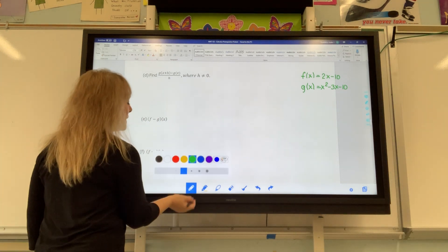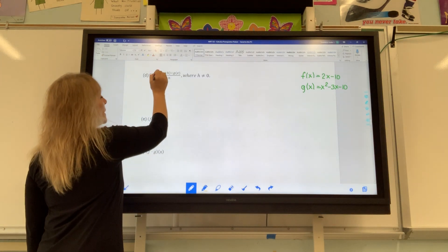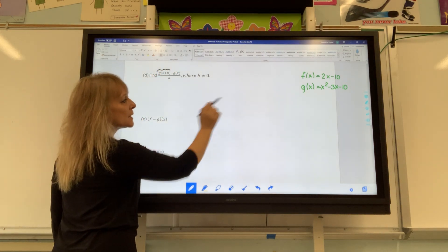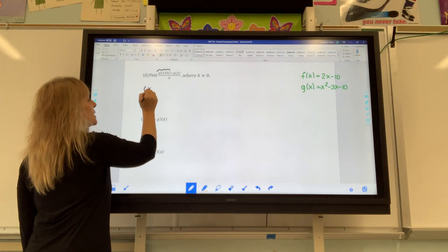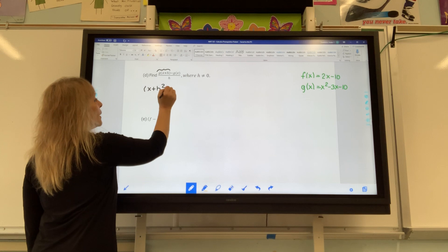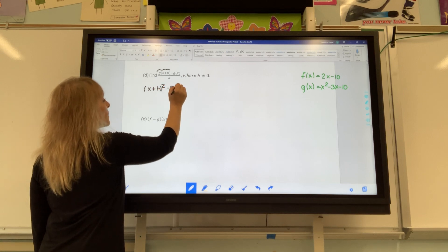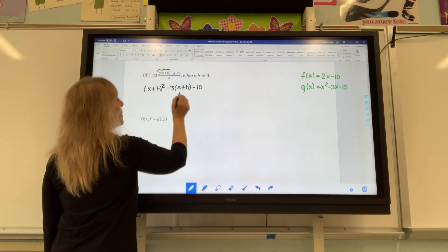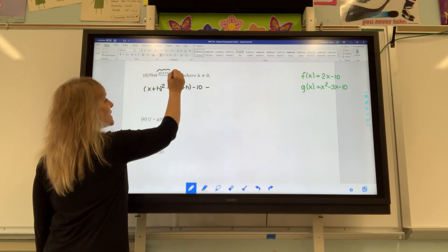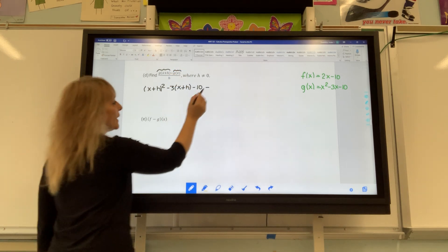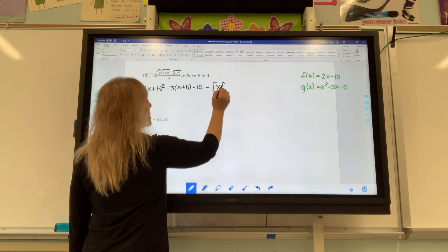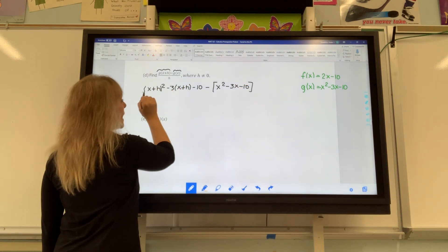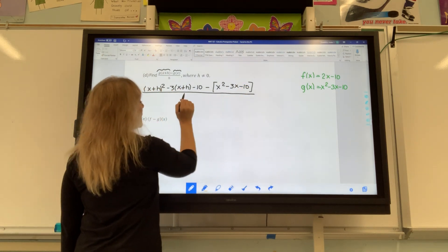So now for letter d, your job is to fill in the binomial x plus h for all the x's that appear in g. So it's x plus h quantity squared minus 3 times x plus h minus 10. But then I'm asking you to subtract off the entire g of x. Put it in parentheses because you're subtracting off the entire thing, and then divide the whole thing by the letter h.